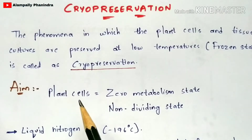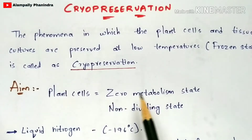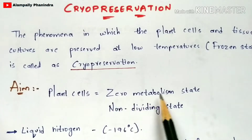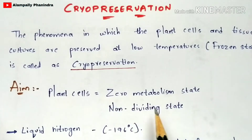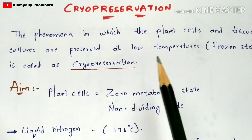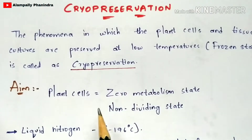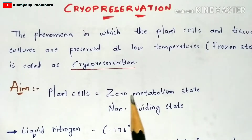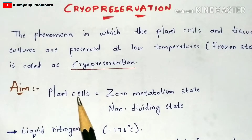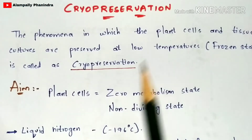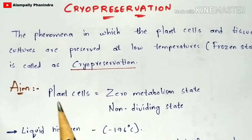What is the main aim of cryopreservation? It makes the plant cells get into an inactive form — that is a zero metabolism state, where metabolism doesn't occur. Cell division also doesn't occur when plant cells are present at low temperature. Cell division, that is the cytokinesis process, doesn't occur, and metabolism also doesn't occur in these plant cells when they are in the low temperature state.